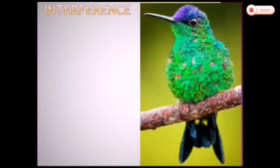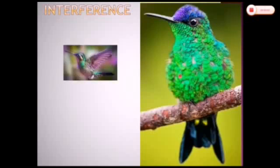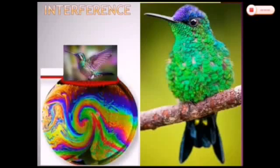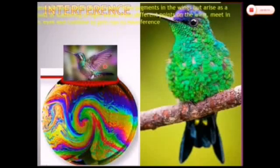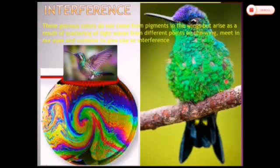Halos of light around street lamps or the moon on a foggy night, light and dark bands if you look through fabric at a bright light source, soap bubbles, and these glorious colors do not come from pigments in the wing but arise from scattering of light waves from different points that meet in our eyes and combine to give rise to interference. All these are examples of interference from daily life.